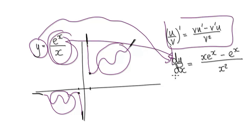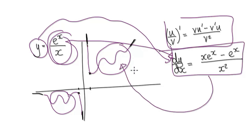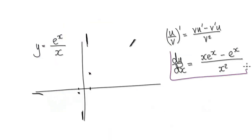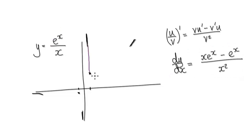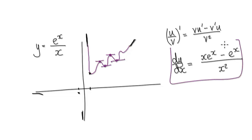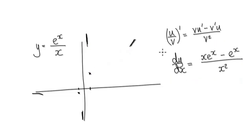When you differentiate it, it will give you this. Now by using this, we can determine if the graph will or will not do this. Look at the gradient — it will give you more insight into the actual graph. If the graph truly does this, then we know there are many points where the gradient would be zero: here, here, and here. So let's find out where the gradient would be zero.